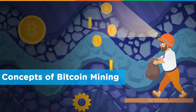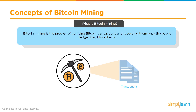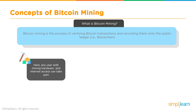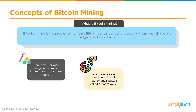Bitcoin mining is the process of verifying Bitcoin transactions and recording them onto the public blockchain ledger. Transactions are verified by Bitcoin users called miners — participants with the required hardware and computing power. There is no centralized body; any user with mining hardware and internet access can participate. The process is solved based on a difficult mathematical puzzle called proof of work. Every miner's job is to solve that puzzle in order to validate the transaction and earn the reward, and the miner who first solves the puzzle gets the reward.